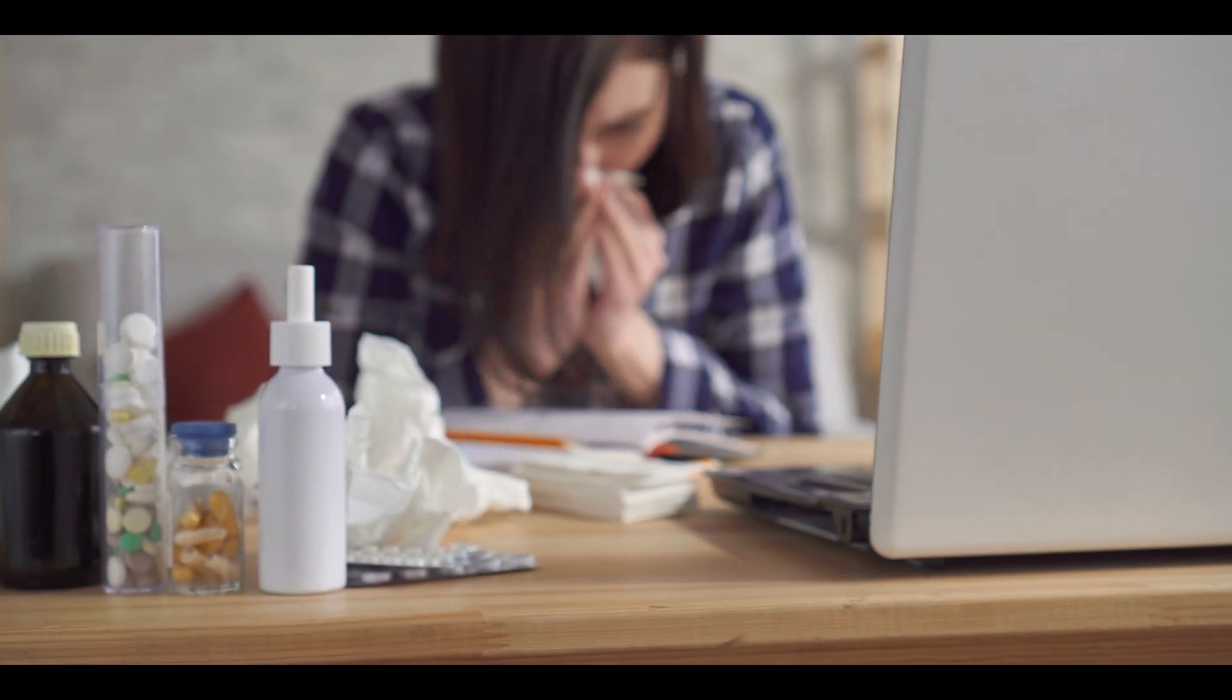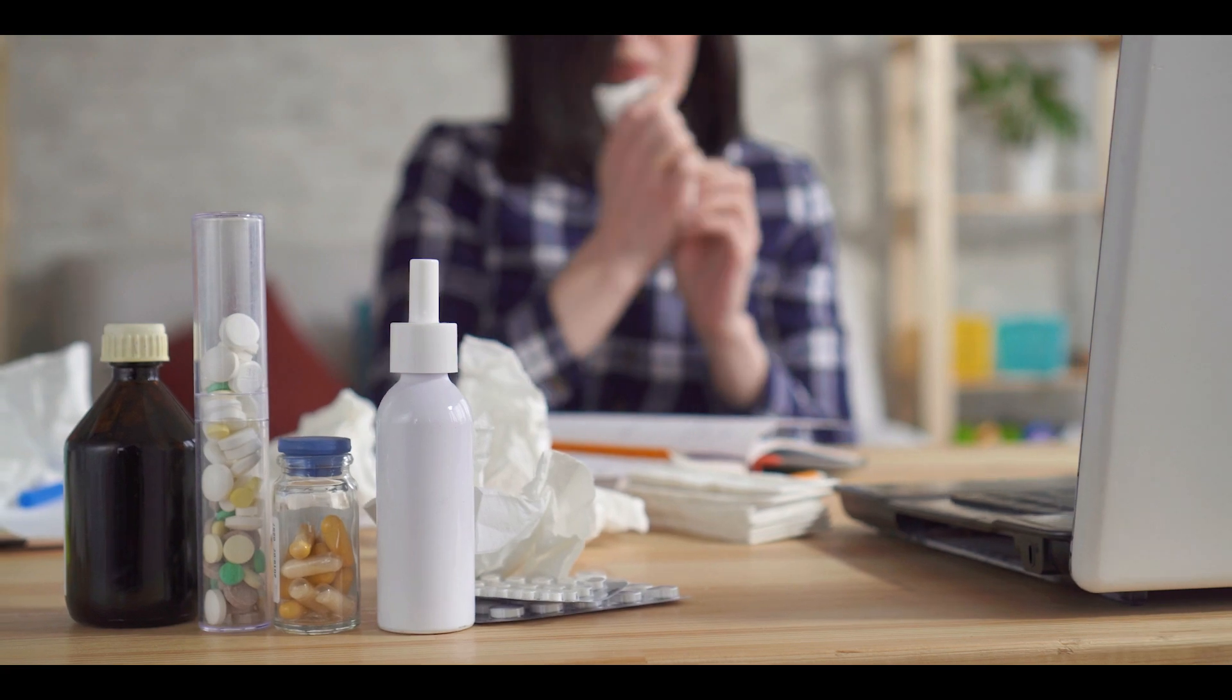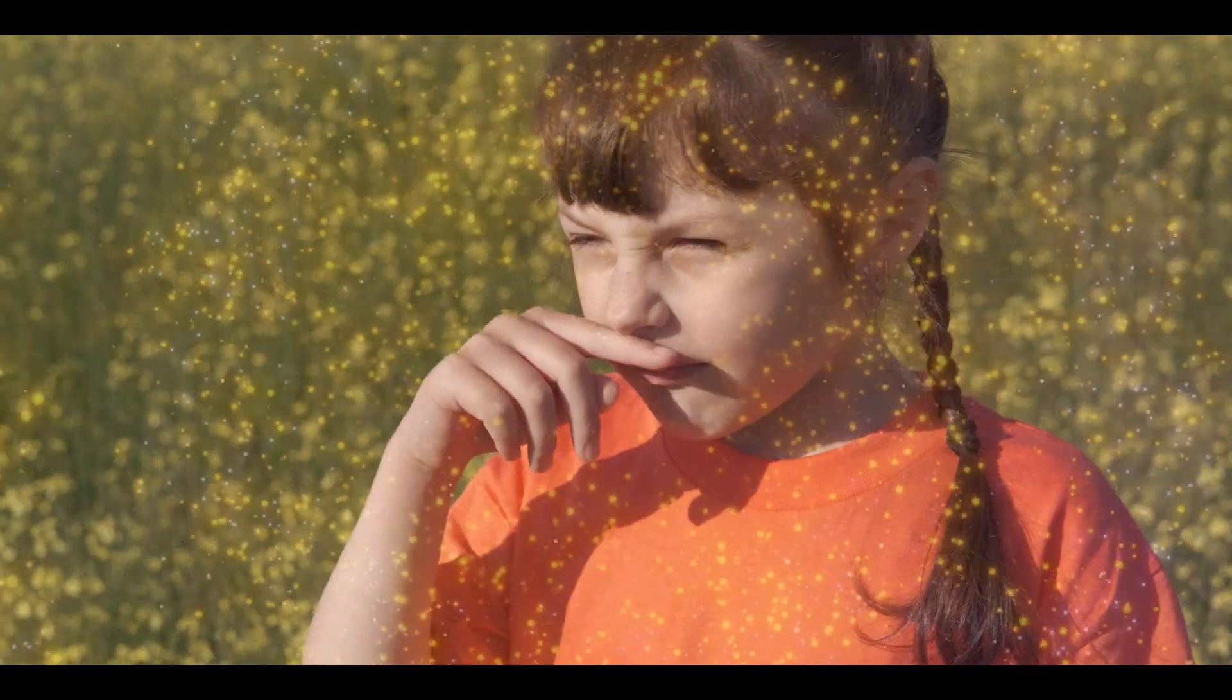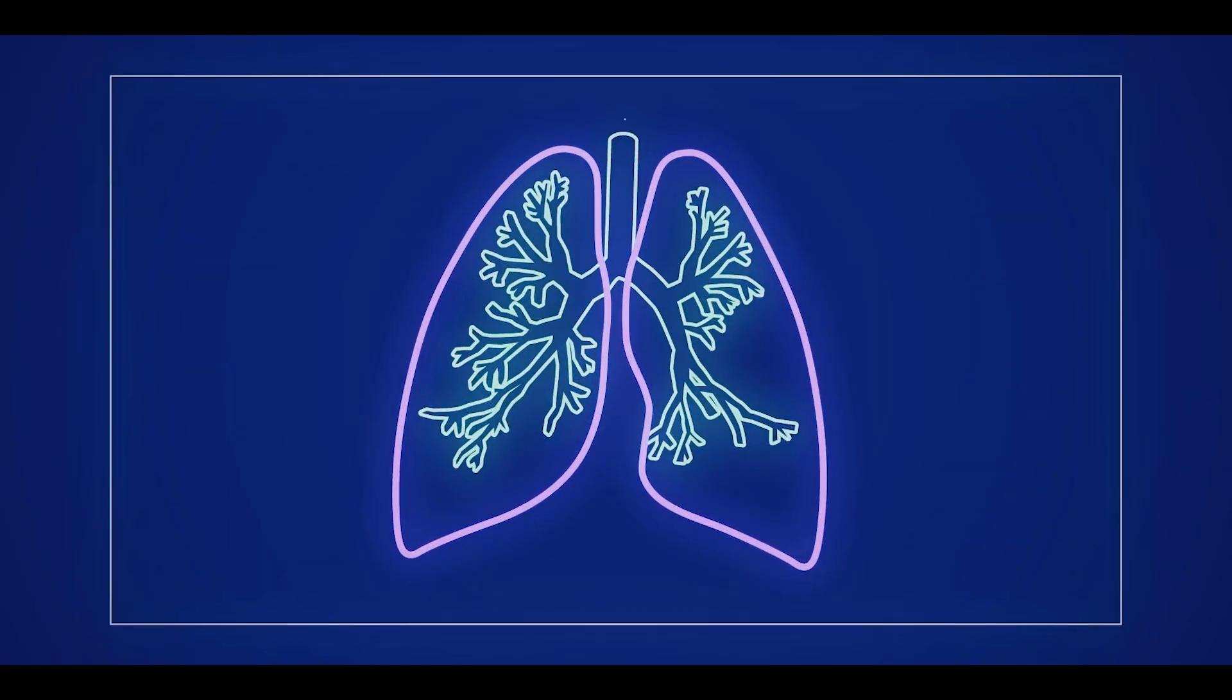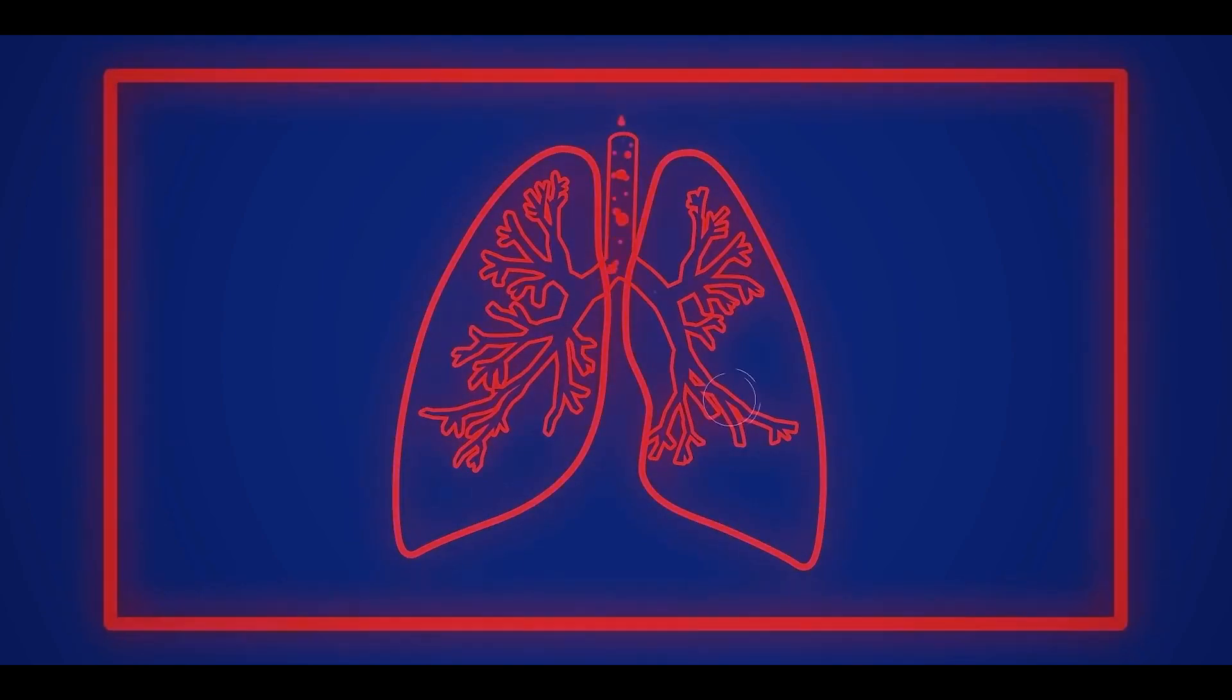Some people are allergic to certain chemicals and particles such as pollens due to unknown reasons. These particles and chemicals are called allergens. Whenever an allergic person is exposed to allergens, these allergens enter the lungs and reach the bronchioles.